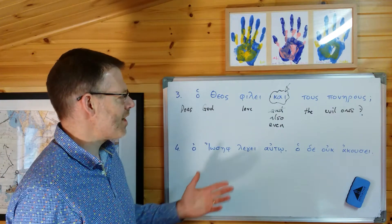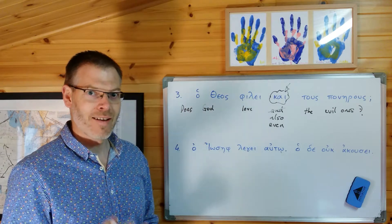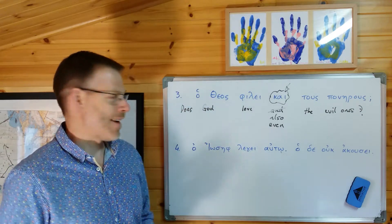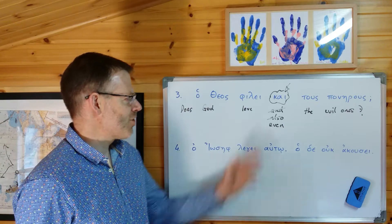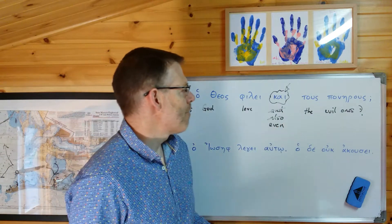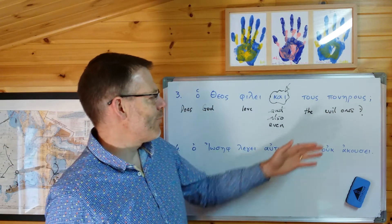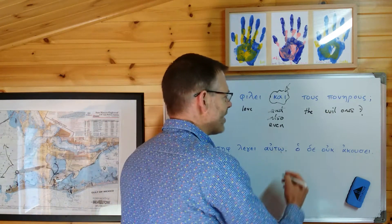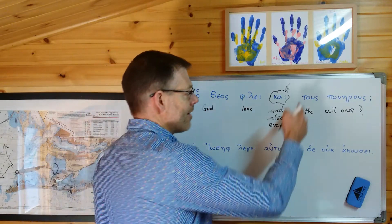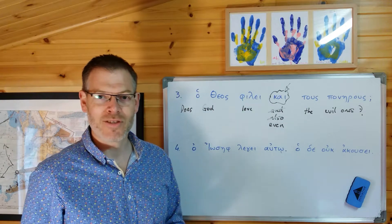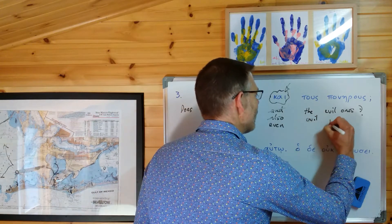Does God love 'and' the evil ones? Clearly nonsense. But 'also' or 'even' - either of those work. 'Does God love also the evil ones? Does God love even the evil ones?' Even is probably just preferable in English. One final thought: tous ponerous - it might be better to translate that as 'the evil people' or just 'evil people' without the article, which is more idiomatic in English. It's masculine plural, and masculine can be used generally for both men and women in this kind of context. So: 'Does God love even evil people?'